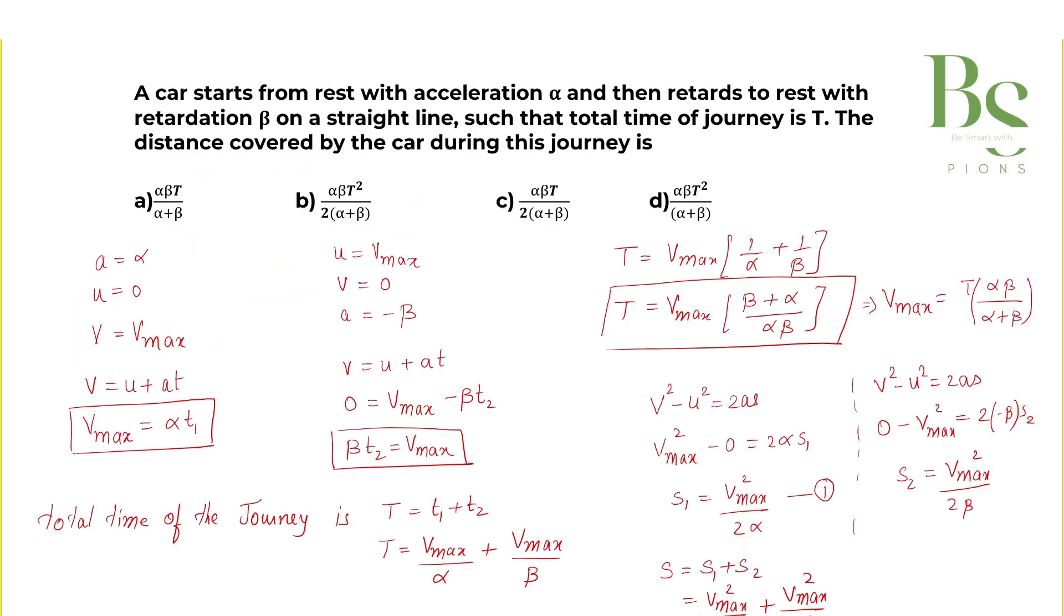So which is option B. Alpha beta T squared upon twice of alpha plus beta.